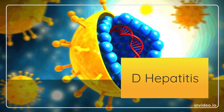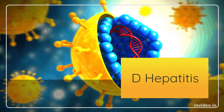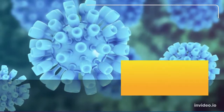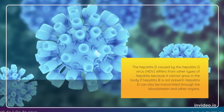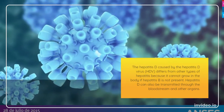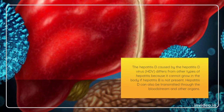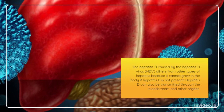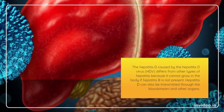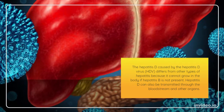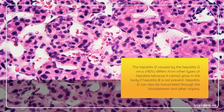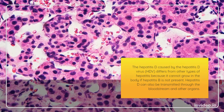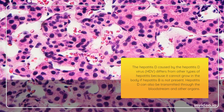Hepatitis D is caused by the Hepatitis D virus, HDV, and differs from other types of Hepatitis because it cannot grow in the body if Hepatitis B is not present. Hepatitis D can also be transmitted through the bloodstream and other organs.